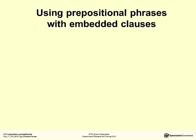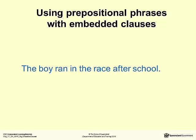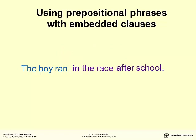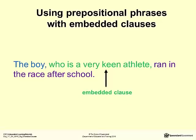Let's have another look at the sentence 'the boy ran in the race after school.' We know it contains the prepositional phrases 'in the race' and 'after school.' Now let's add an embedded clause. We know that an embedded clause provides specific details — in this case, the details should be about the boy in the race. Therefore, the embedded clause is 'who is a very keen athlete.' We know more about the boy now: 'The boy, who is a very keen athlete, ran in the race after school.'